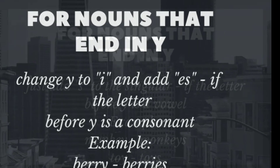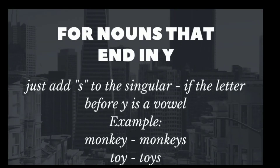If the letter before Y is a vowel, we just add S. For example, monkey — M-O-N-K-E-Y. The letter before Y is E, which is a vowel. So we just add S: monkeys — M-O-N-K-E-Y-S.